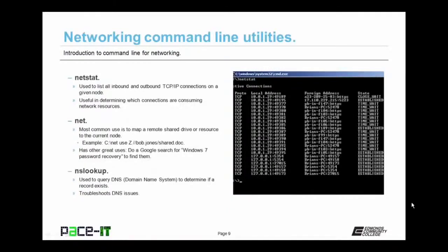Netstat is used to list all inbound, outbound TCP/IP connections on a given node. It's very useful in determining which connections are consuming network resources. The net command is most commonly used to map a remote shared drive or resource to the current node.